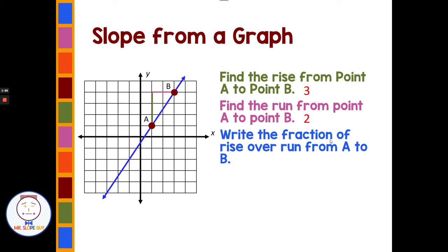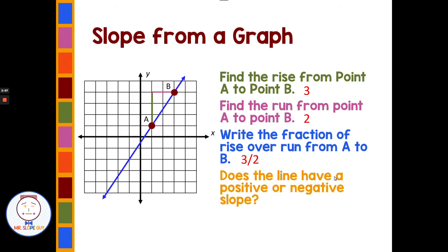Slope is rise over run, so we write the fraction of rise over run from A to B. That's three spaces for rise over two spaces for run, giving us three over two. Does the line have a positive or negative slope? Looking at this line from left to right — just like how we read — it's going up from left to right, so it has a positive slope. If you write your name along the line, you can see it goes up from left to right.